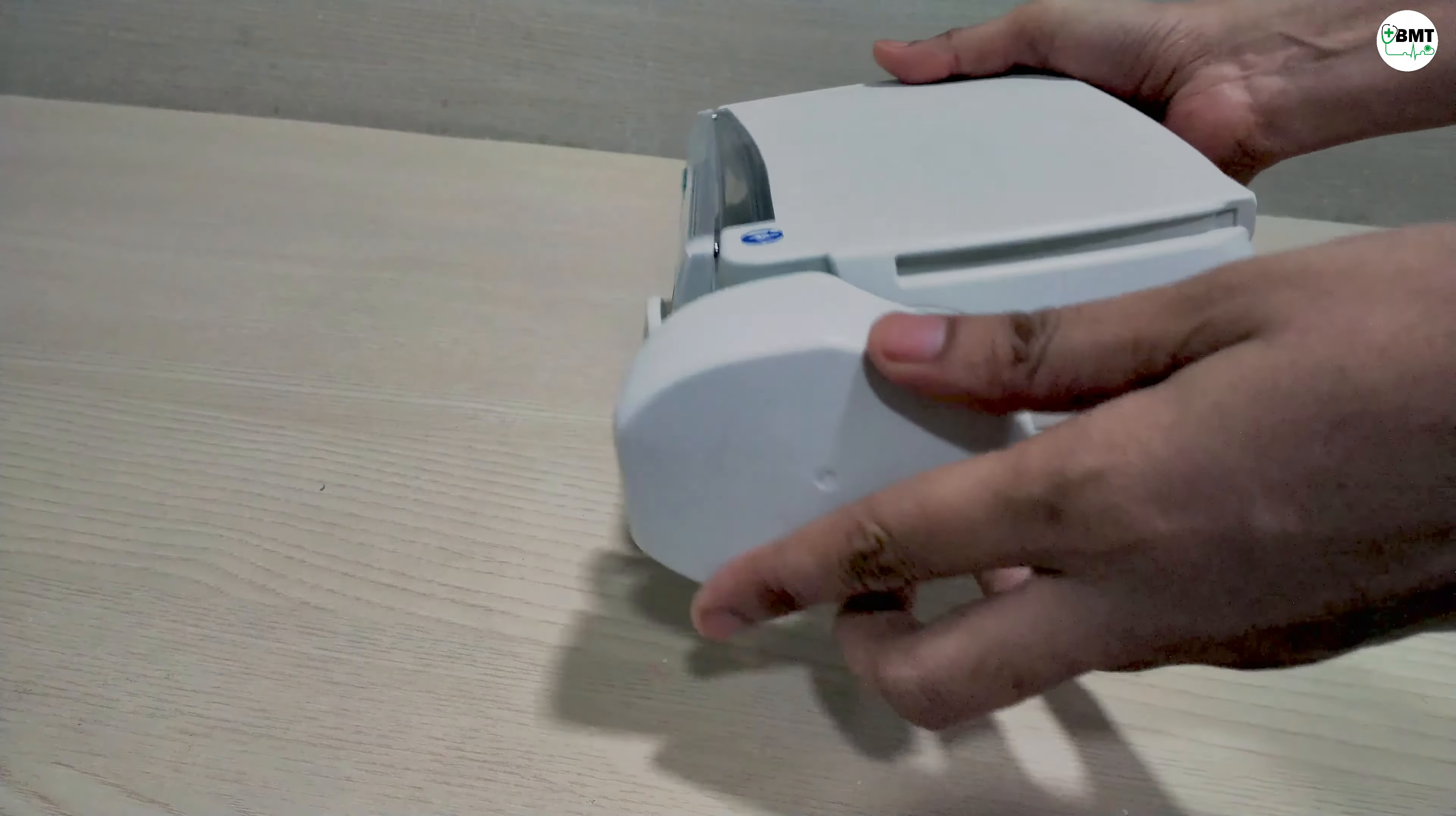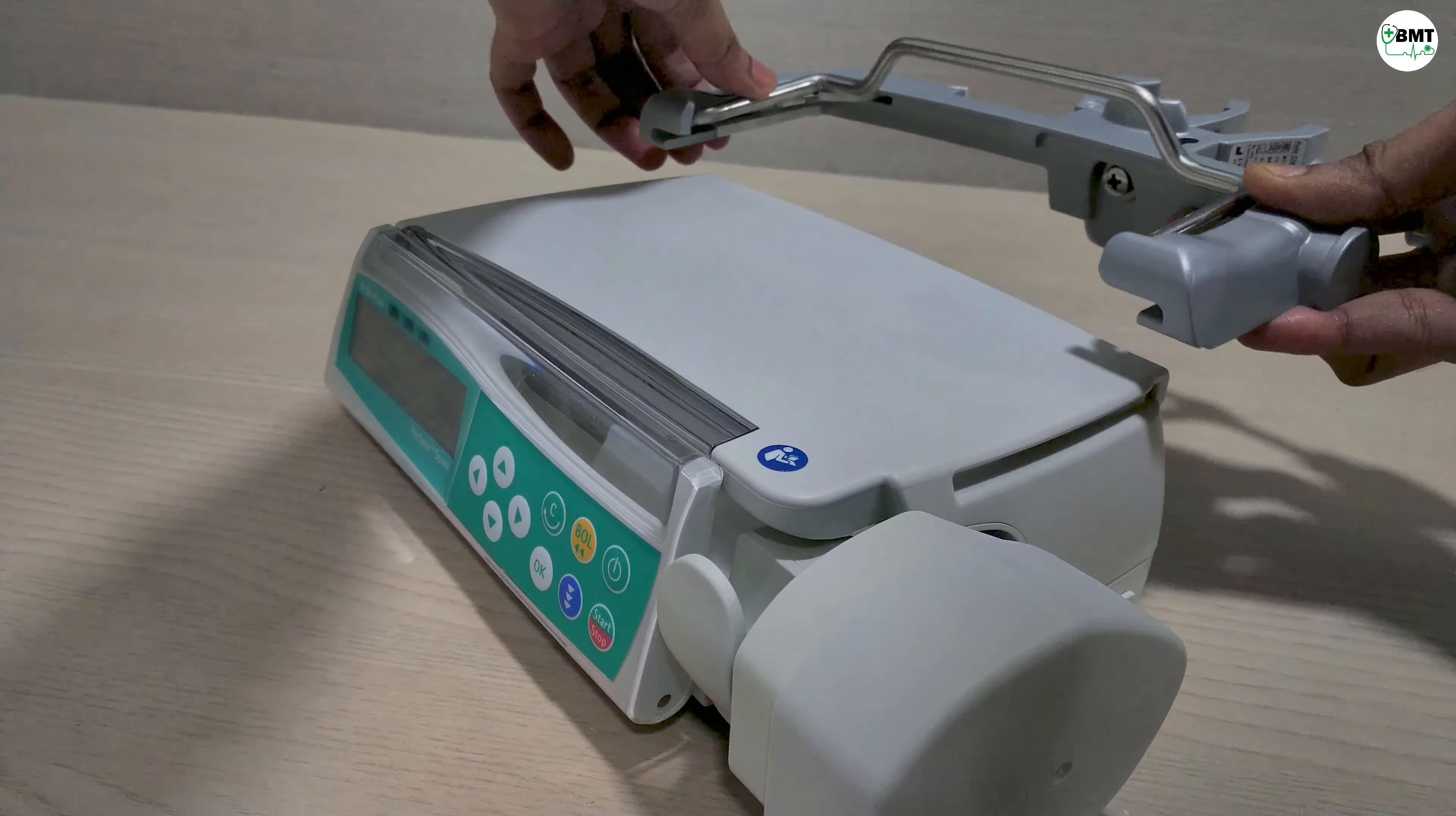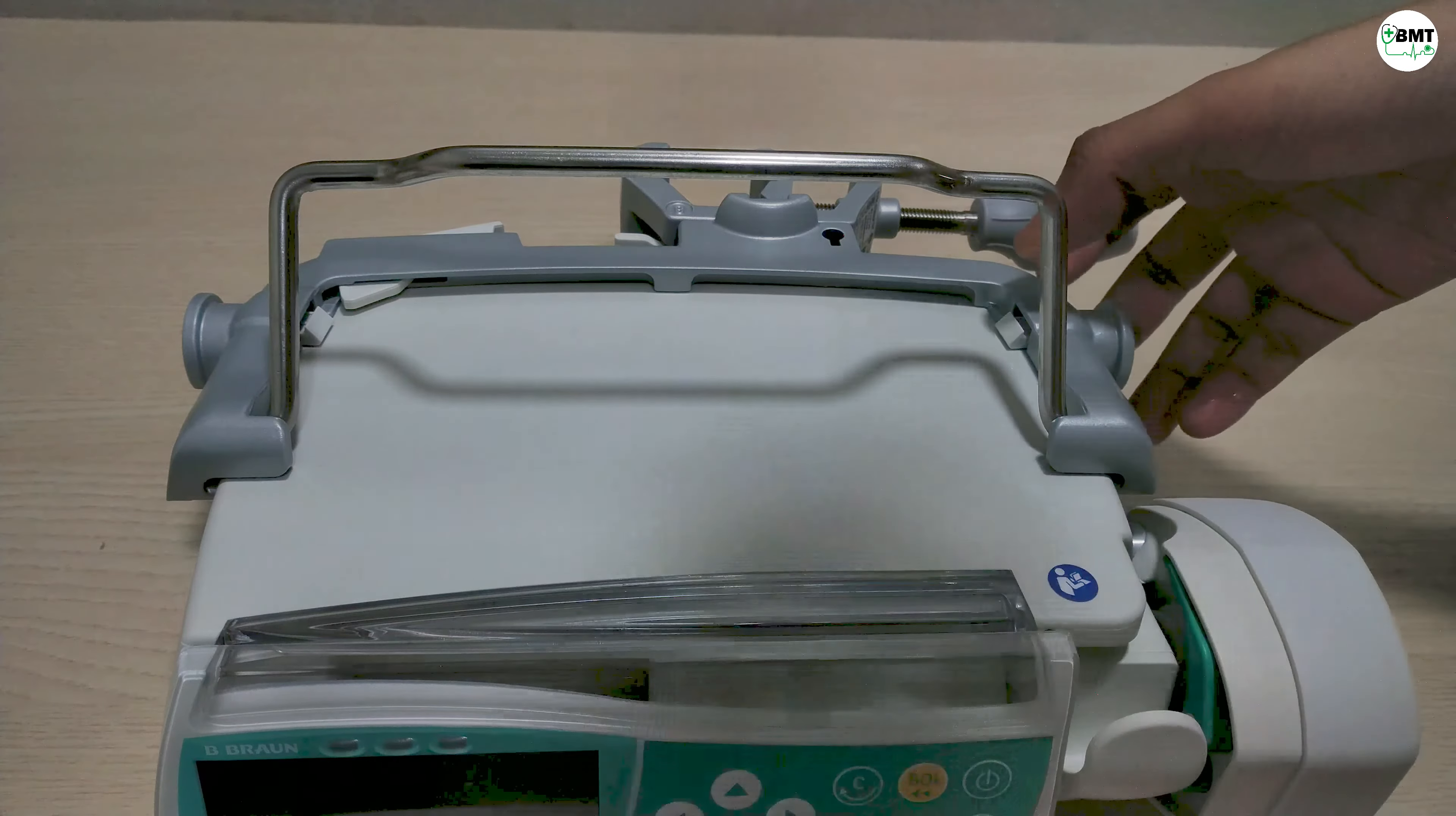Now how to fix the pole clamp. Match this notch. For dislocating this pole clamp, first tilt it up, press this and this notch together.